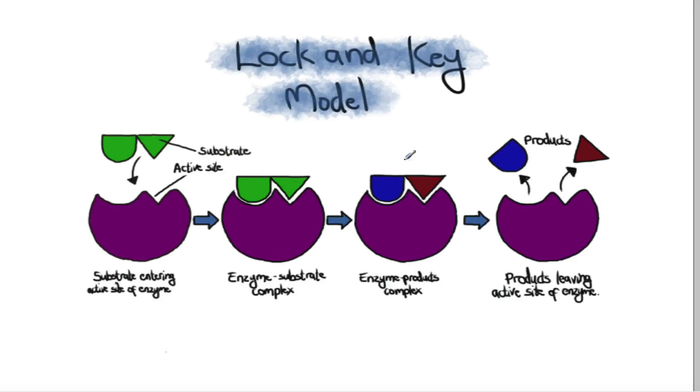That's what they've said is higher tier but I think we should all learn this. In this case that substrate is being split and we've got two new products being given off. Now you could just as easily have two products fit into the enzyme and be knitted together to make a bigger product, or sometimes enzymes just change slightly the shape of the substrate into a different molecule.